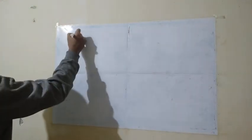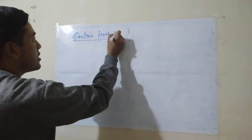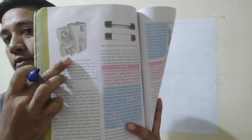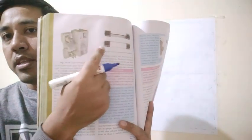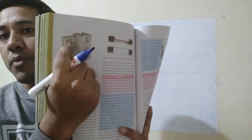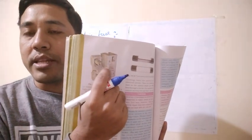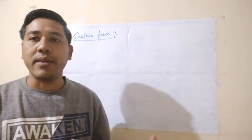Before I start explaining the applications of heating effect of electric current, I will explain one important property — that is the electric fuse. This electric fuse is one of the most important electrical appliances. It is also one of the electrical appliances which can protect or prevent the electrical short circuit of our electrical appliances or our room.